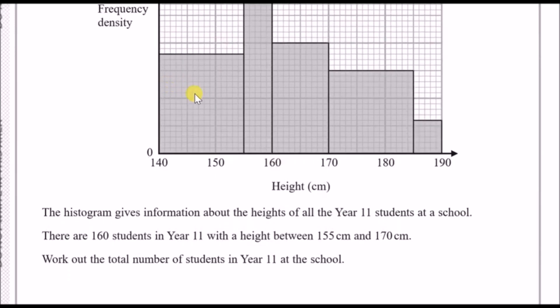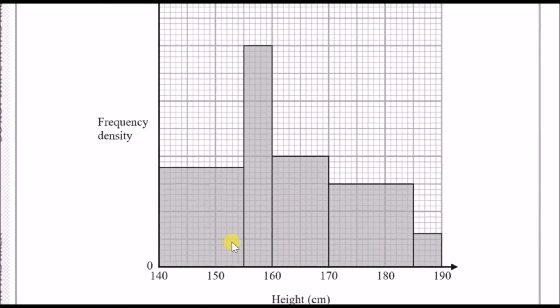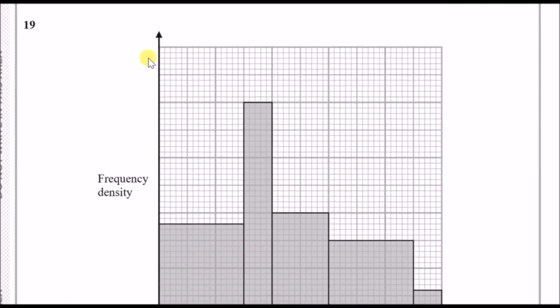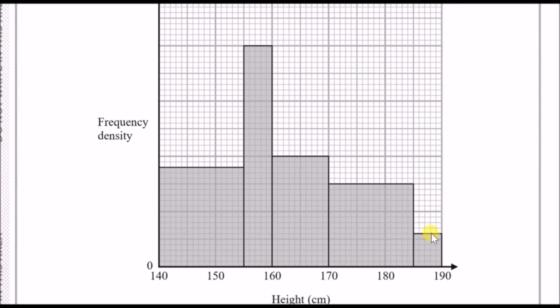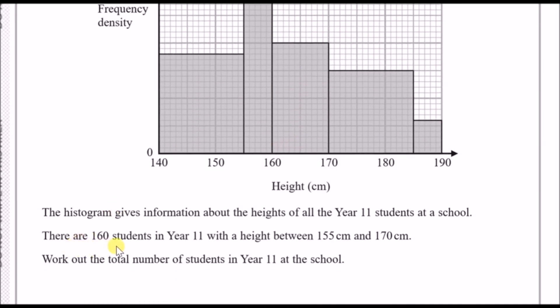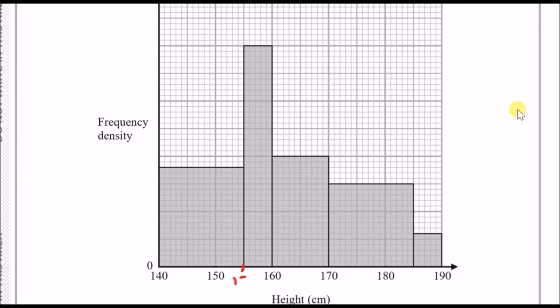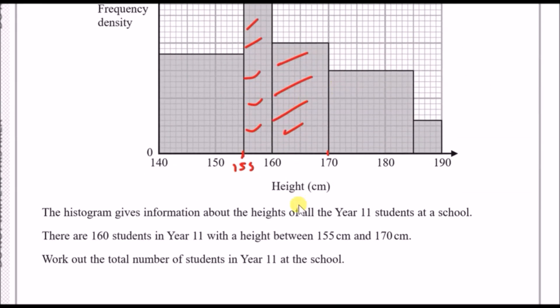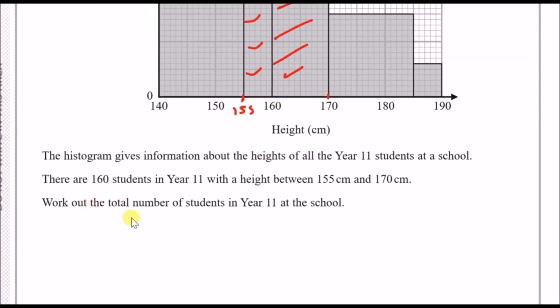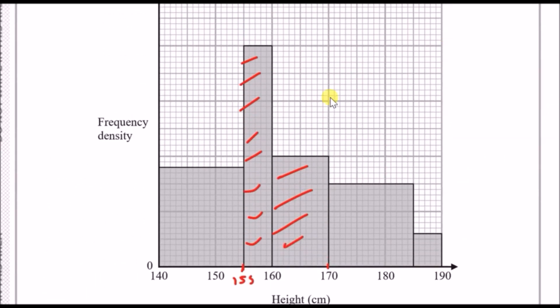Question 19. They give us a histogram. This histogram gives information about the heights of all year 11 students at school. You've got your height between 140 to 190, and you've got frequency density on the y-axis. The area of each block would be the number of pupils or the frequency. There are 160 students in year 11 with a height between 155 and 170. So 155 should be this margin here, and 170 is here. Essentially, the area of these two blocks, this one and that one, has a total area of 160.